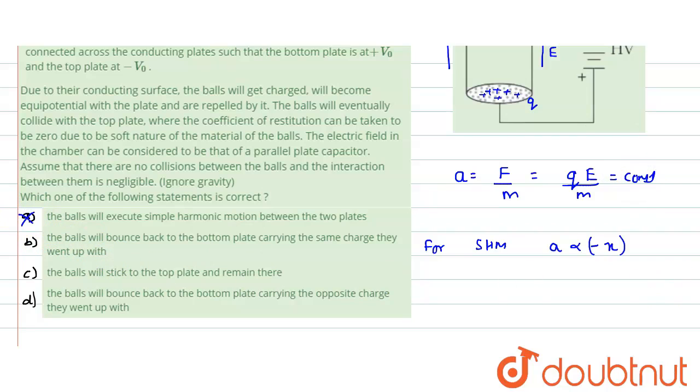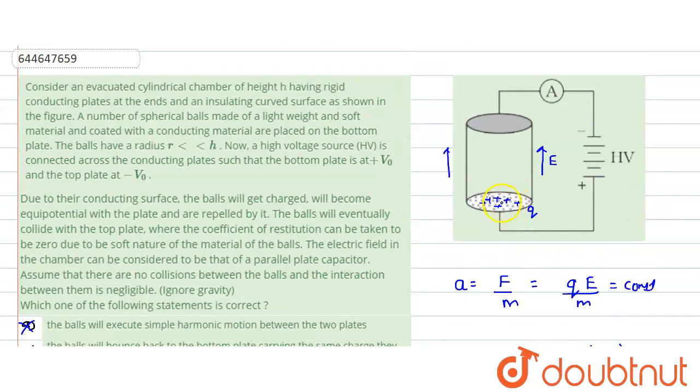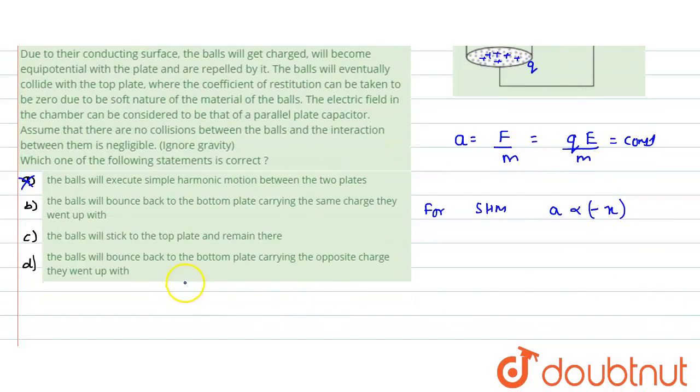What will happen after that? Will they carry the same charge, stick, or bounce back? Since they have a positive charge, they will come here with positive charge, and this is the negative charge. Ultimately, they would give up their charge. While giving up, they would come to the negative charge terminal of the battery. Again they will become equipotential with this terminal, and due to repulsion they would come back with negative charge. That means they would bounce back to the bottom plate with the opposite charge.